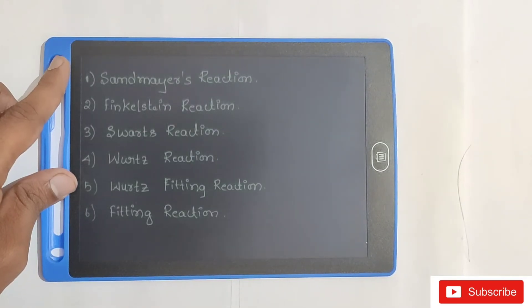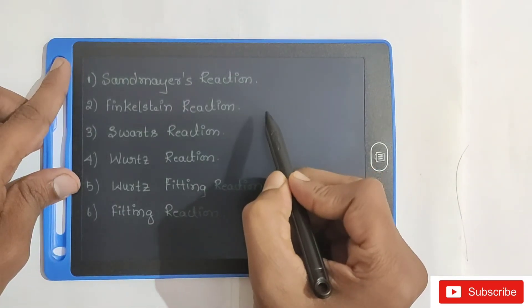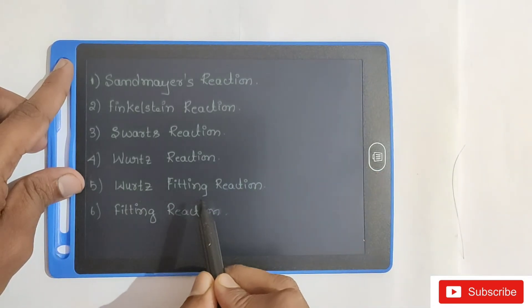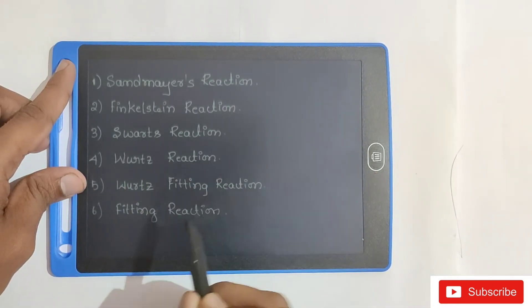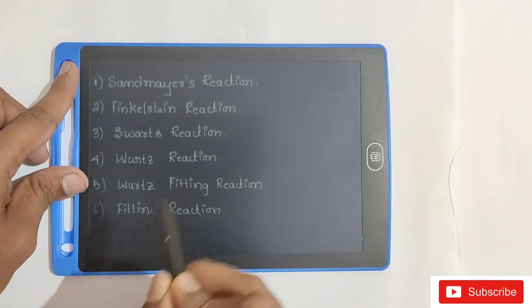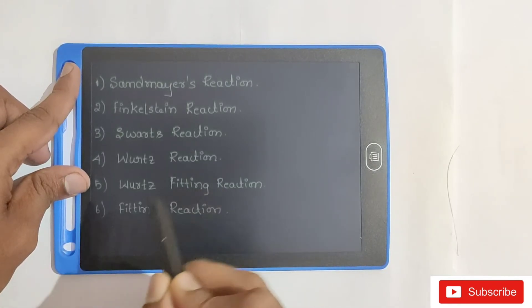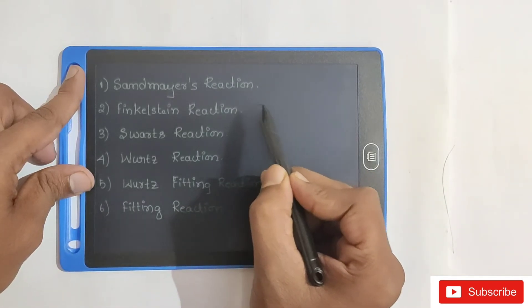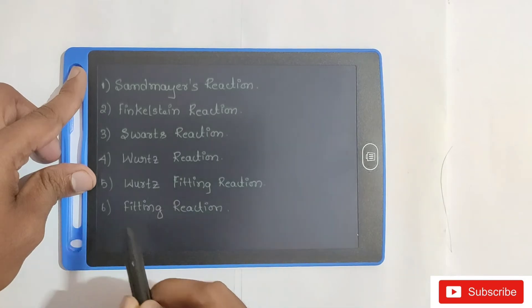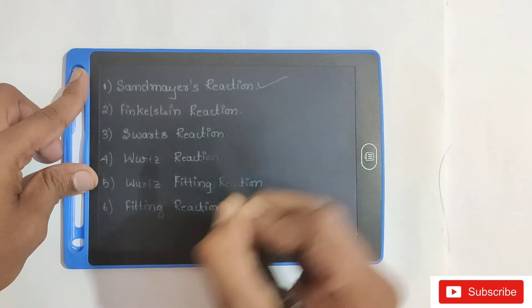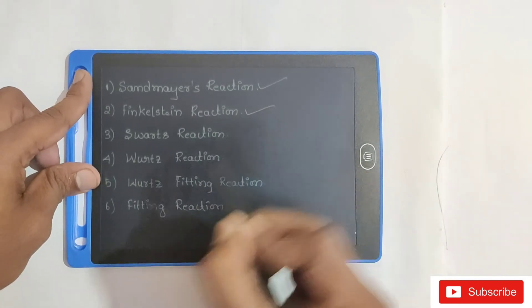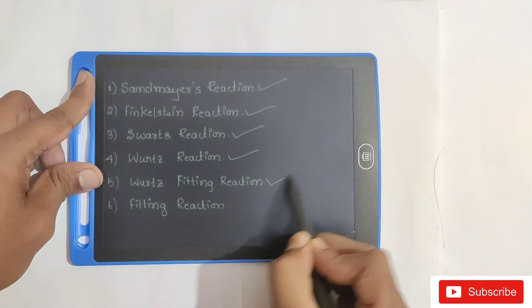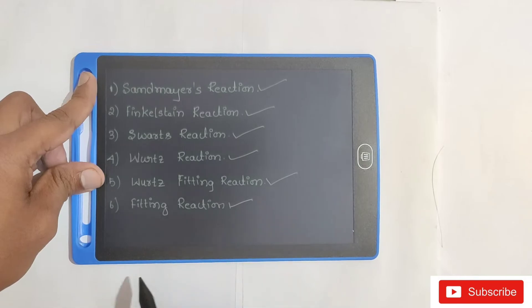Okay, video start. Now we are going to discuss important reactions of haloalkanes. These are named reactions which frequently appear in question papers. The reactions are: Sandmeyer's reaction, Finkelstein reaction, Swarts reaction, Wurtz reaction, and Wurtz-Fittig reaction.